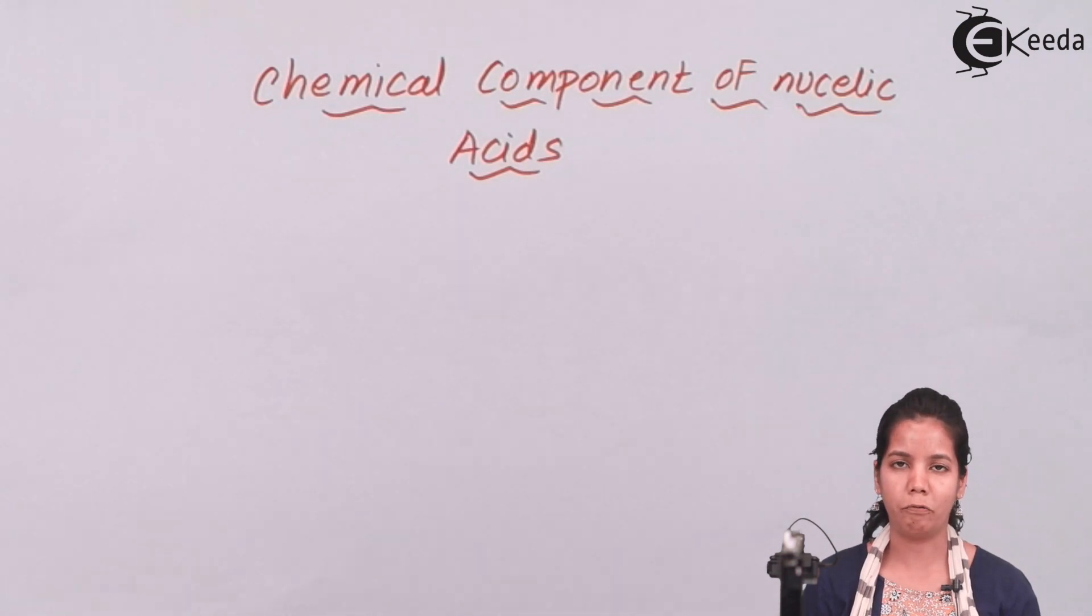Now basically we all know the structure of DNA that it is double stranded, helically coiled, runs 5' to 3' and 3' to 5' anti-parallel complementary, all of those things.